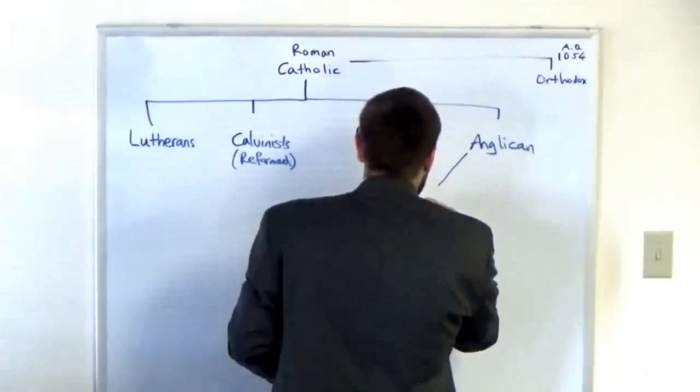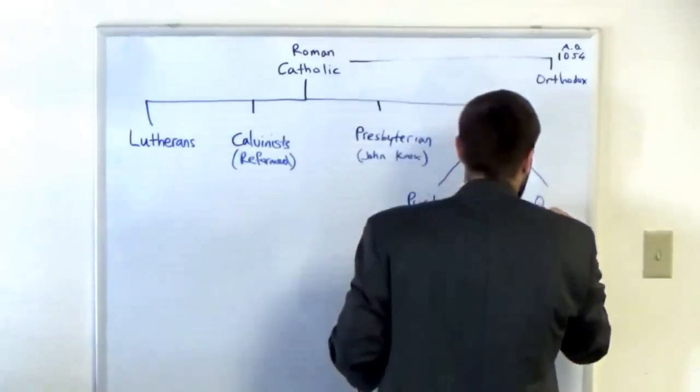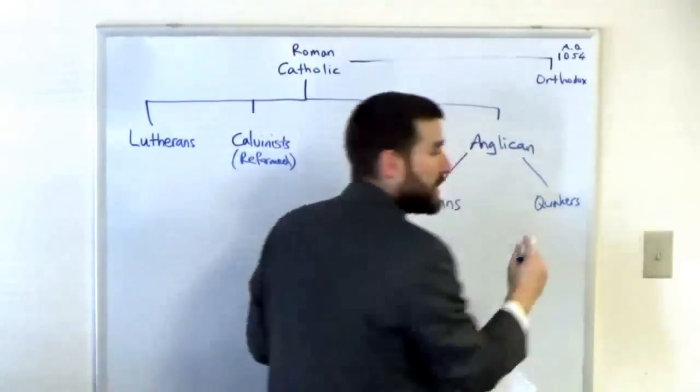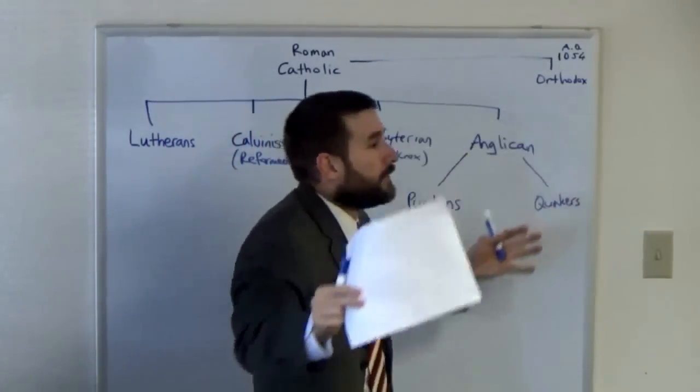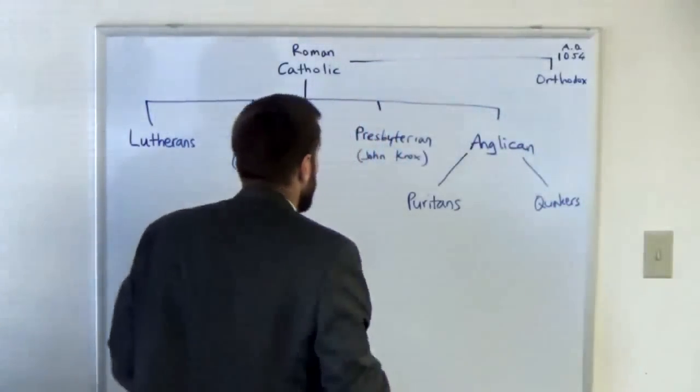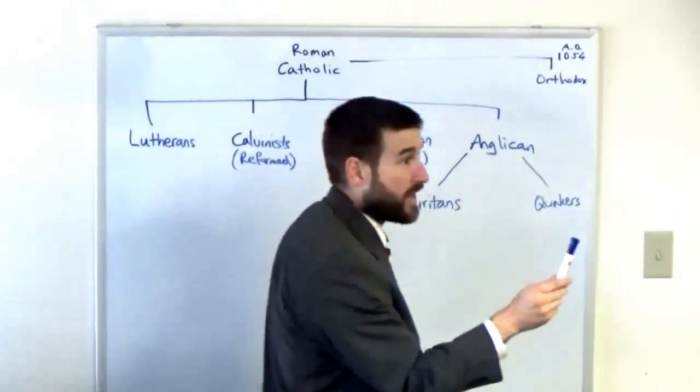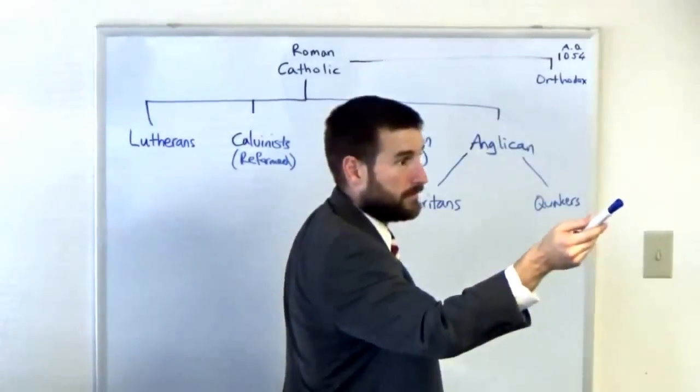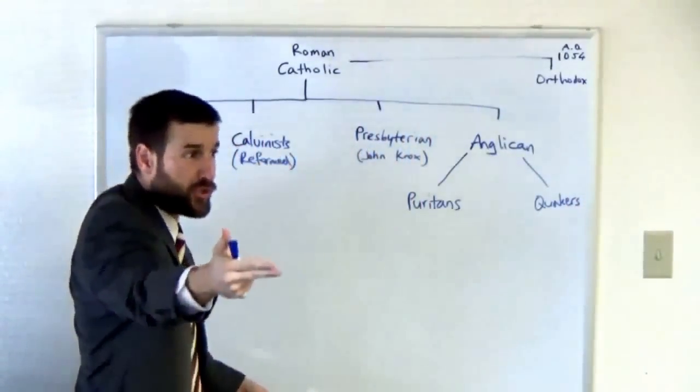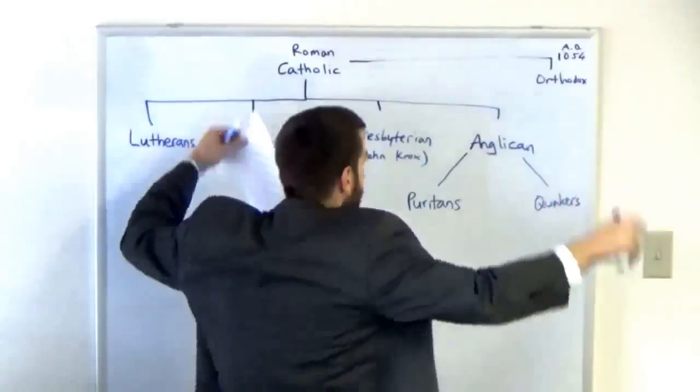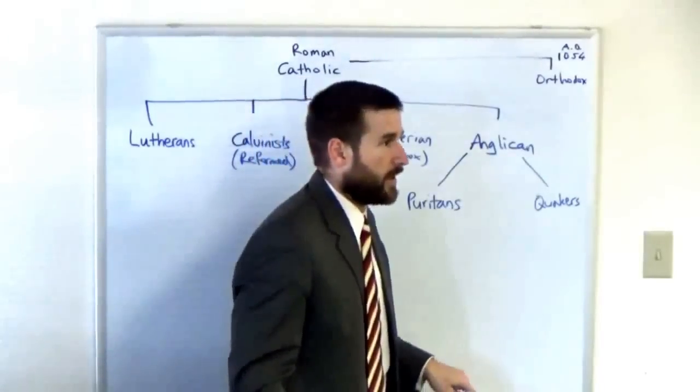Out of the Anglicans you've got movements from England like the Puritans and the Quakers coming out of that movement. And by the way, they're called Quakers because that's what they do, like an earthquake. It's demonic. They don't call themselves Quakers, they call themselves the Society of Friends. If you talk to people who go to the Friends Church or the Society of Friends, they are Quakers.